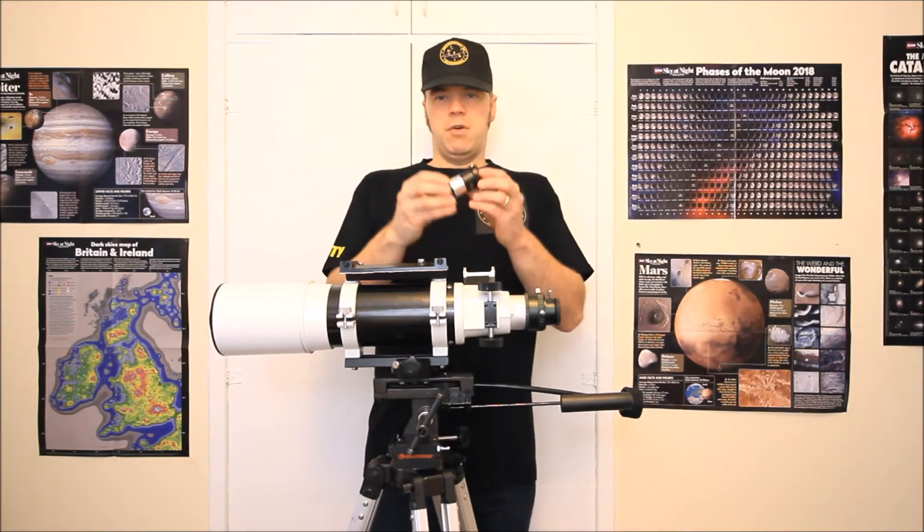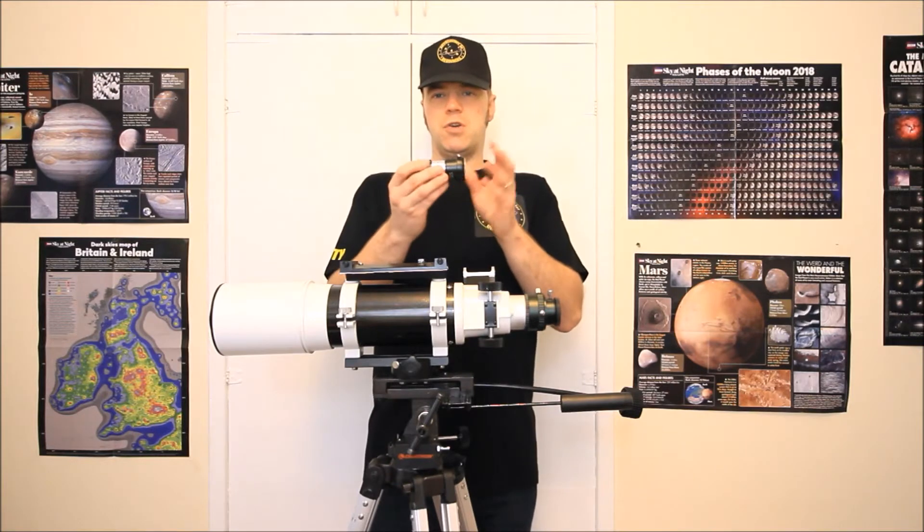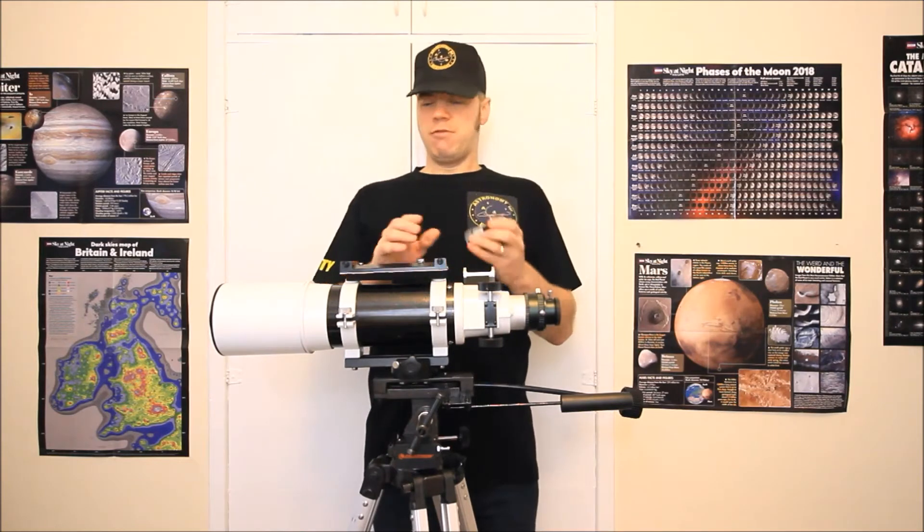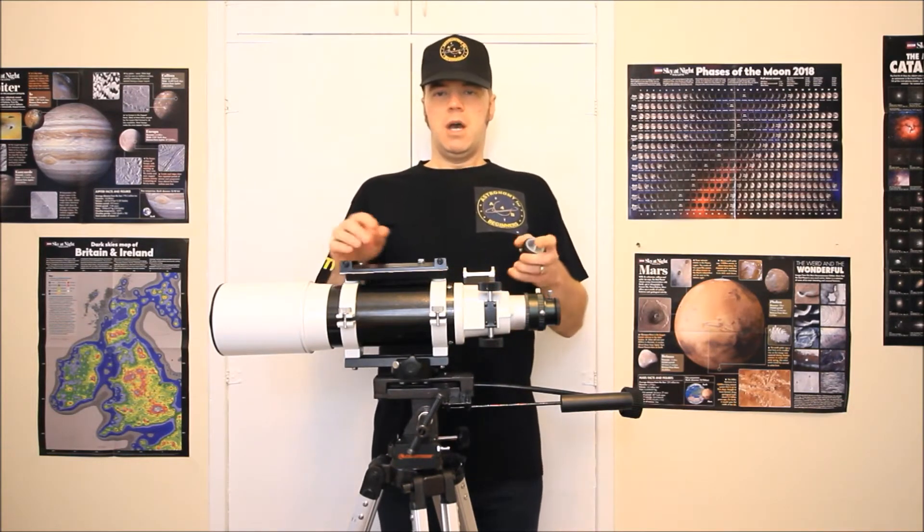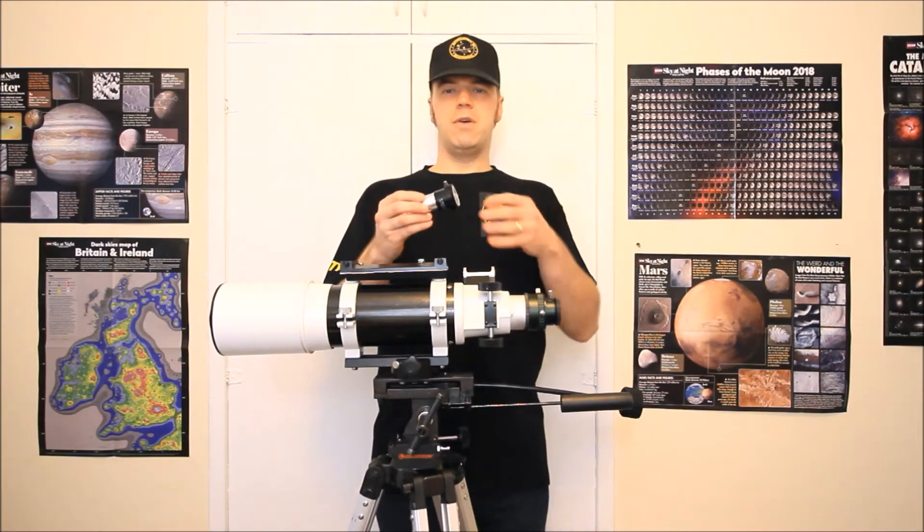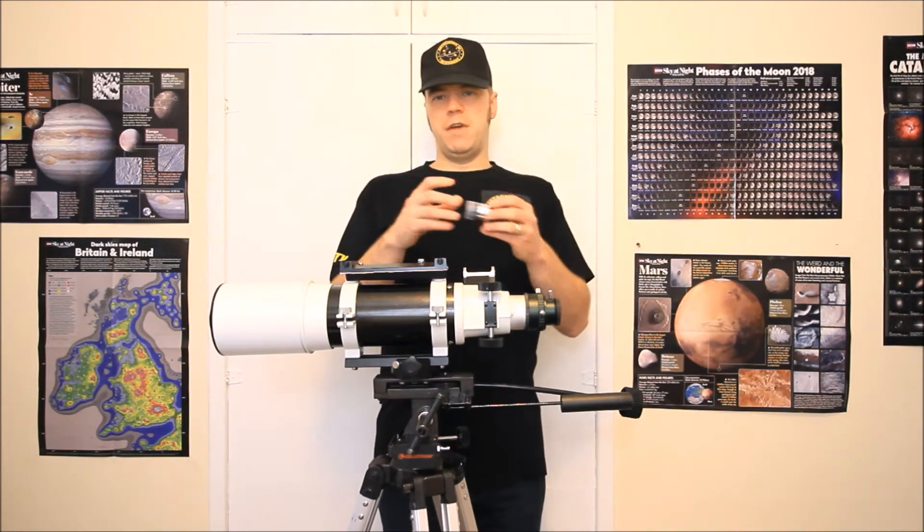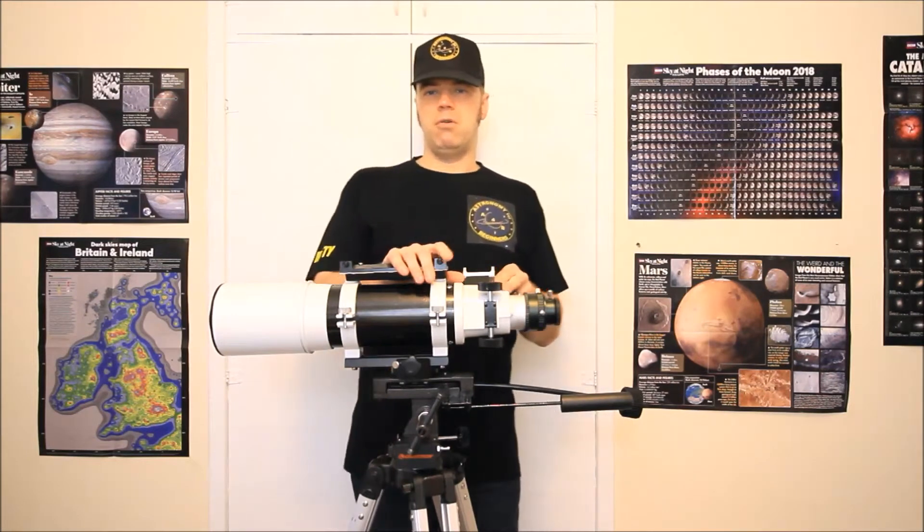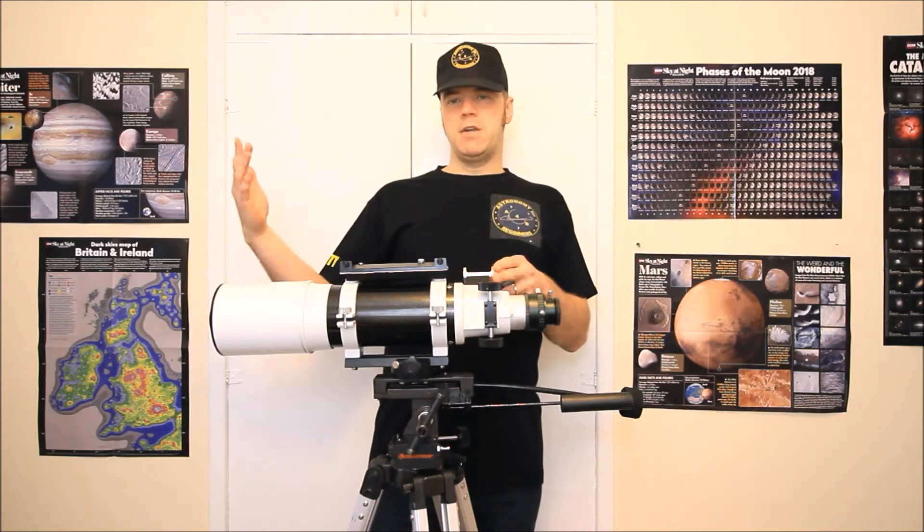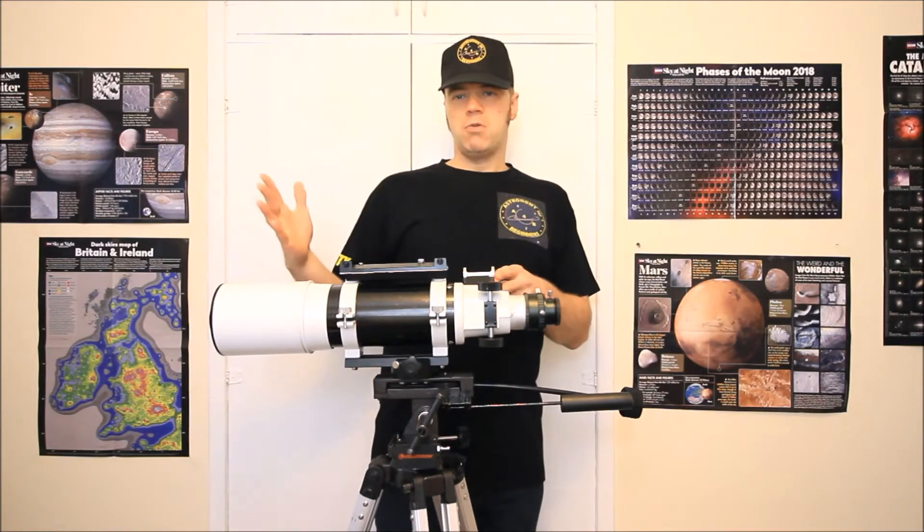The reason I'm doing a review on this is it's so universal. The purpose of a Barlow lens is to increase the focal length of your telescope, which doubles the magnification with your given eyepiece or camera fitted onto there, making your images or views of the moon and planets seem a lot closer.